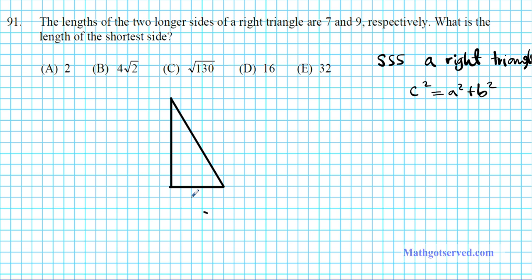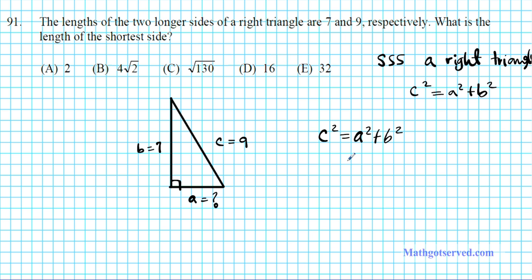We need to find the length of the shortest side. Let's call the shortest side A, and the other two sides B and C. The longest side of a right triangle is always the hypotenuse — the side opposite the biggest angle, which is 90 degrees. So in this case C is 9, B is 7, and A is unknown. Since it's a right triangle with SSS, we apply the Pythagorean theorem: 9 squared equals A squared plus 7 squared.